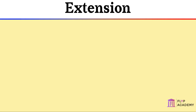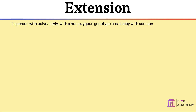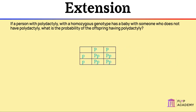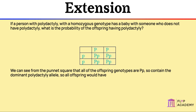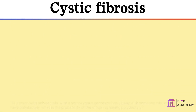Extension: If a person with polydactyly with a homozygous genotype has a baby with someone who does not have polydactyly, what is the probability of the offspring having polydactyly? If one parent is homozygous for polydactyly, they have two dominant alleles and would always pass on that allele. Therefore, there is a 100% chance of their offspring having polydactyly. The Punnett square shows all offspring genotypes are Pp, so all offspring would have polydactyly.